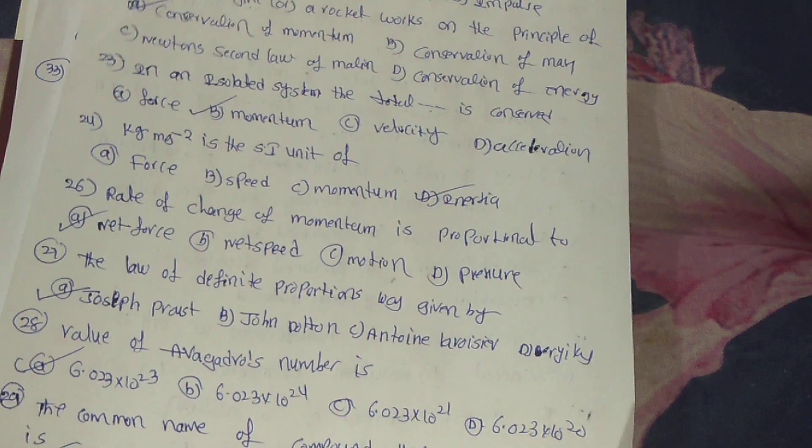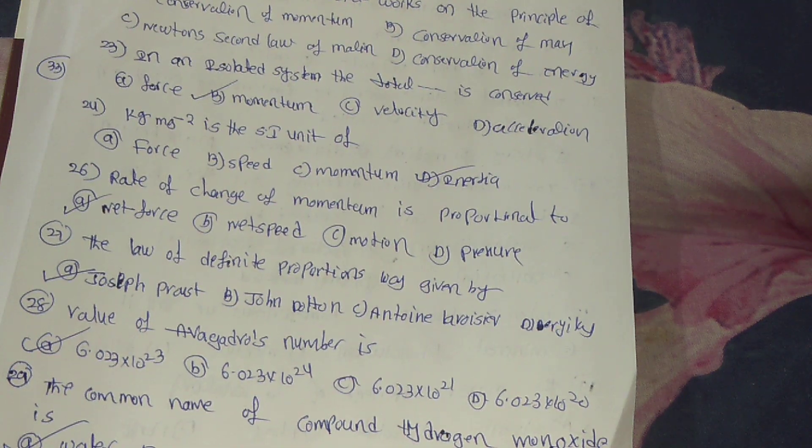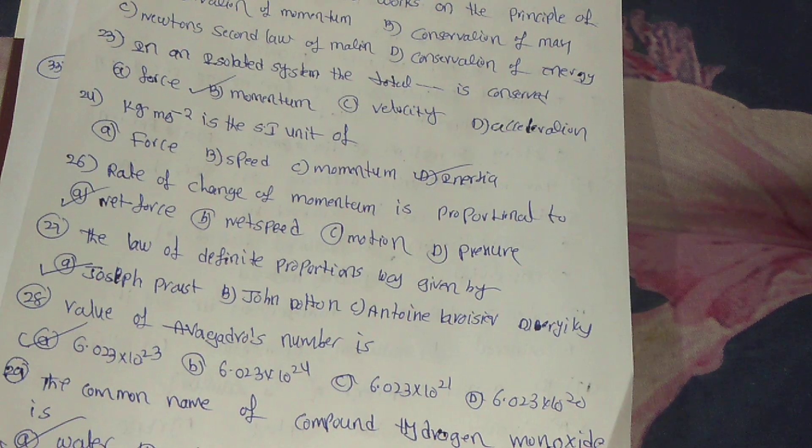Next, 28th: value of Avogadro number is? 6.023 into 10 power 23 is the answer. That is, option A.